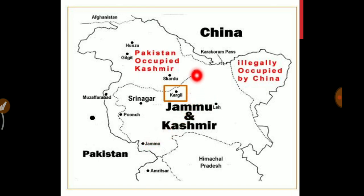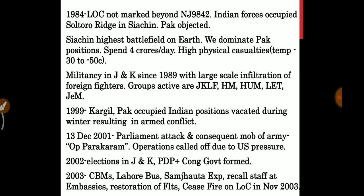There is a blank area on the map at point NJ9842, taken by the Indian government. Since there are no places to deploy forces beyond that point, Pakistan objected to it. In 1984, the Line of Control was not marked beyond NJ9842. Indian forces occupied the Saltoro Reach in Siachen, which Pakistan objected to. The Siachen Glacier — the highest battlefield on earth — was thus created. India dominates Pakistani positions there, spending 4 crores per day, with high physical casualties and temperatures dropping to minus 30 to minus 50 degrees centigrade.